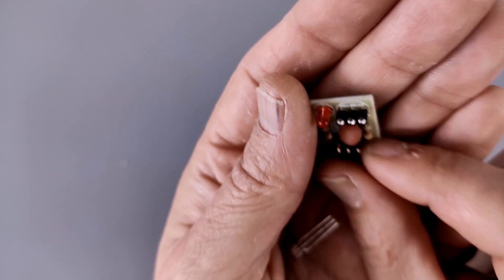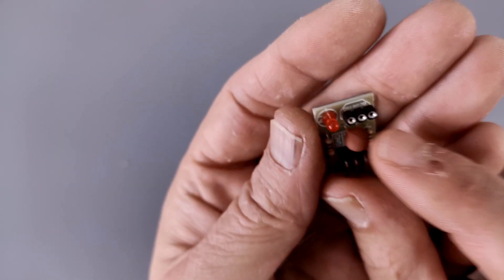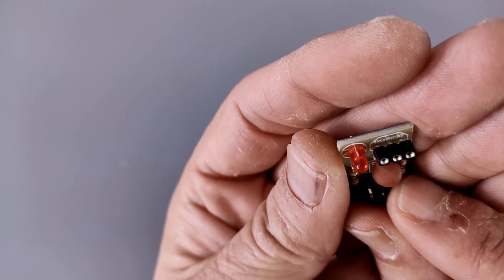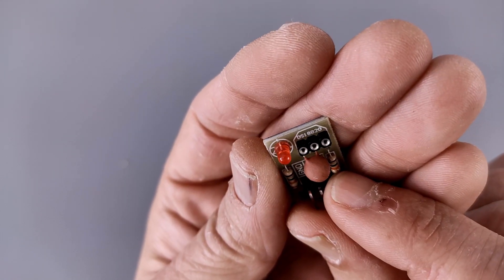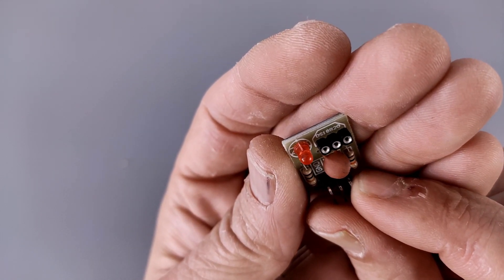But I still don't know what this thing is. Oh wait, there's some labeling on there I could use that for Google. It says I don't know if you can see that, it says DS1, DS18820.